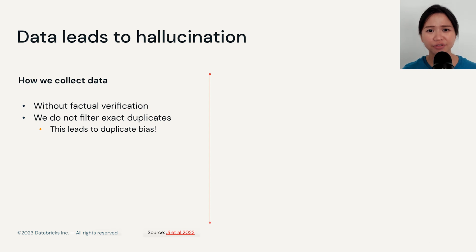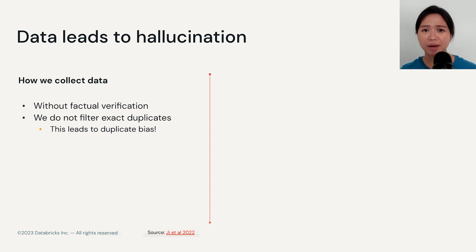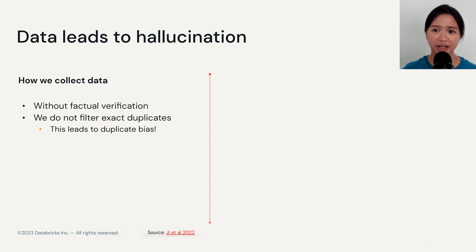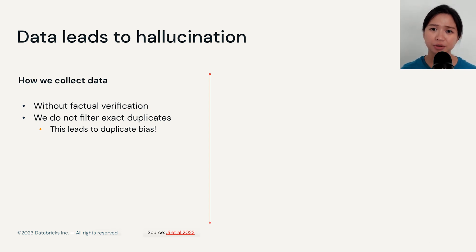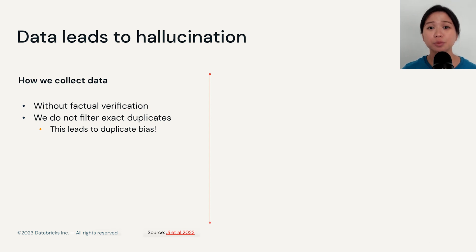We also do not filter out exact duplicates most of the time. For example, if you were to ingest the same Reddit thread twice, that counts as a duplicate, and duplicates can bias the model. If many of the same Reddit threads show up in the data, it's more likely for the model to output responses from those threads.